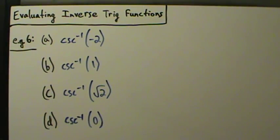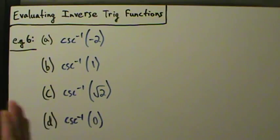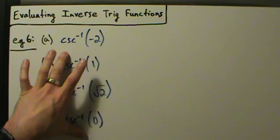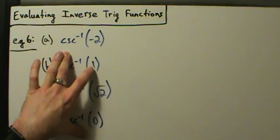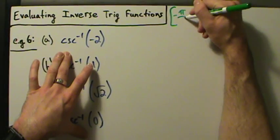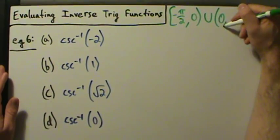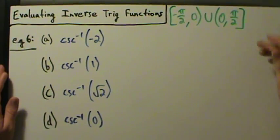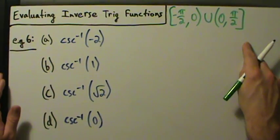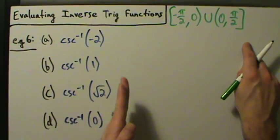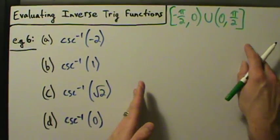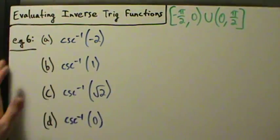Here's example six of evaluating inverse trig functions. In this example, we're going to do the inverse cosecant function. Just like we did in the other five videos, we want to remember what the range of this function is. The range is from negative pi over 2 to 0, union 0 to positive pi over 2. We write this down to the side so we can check ourselves — whatever number we get, we want to make sure it's inside the range, because if it isn't, something went wrong.